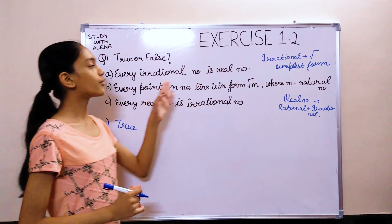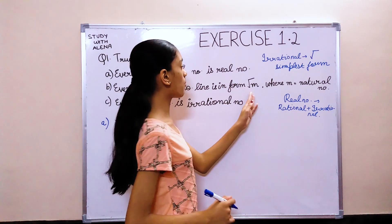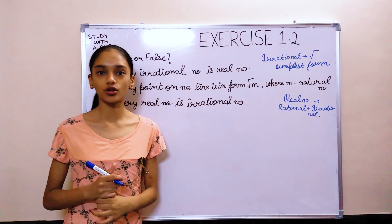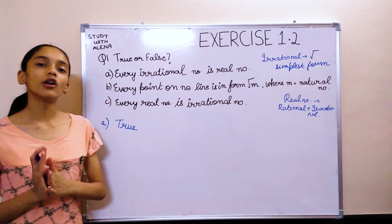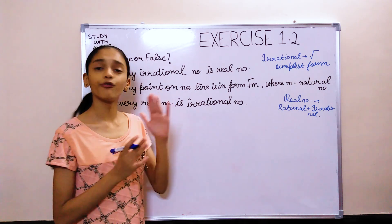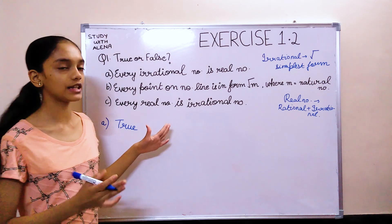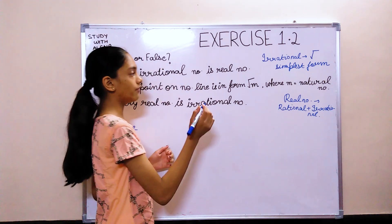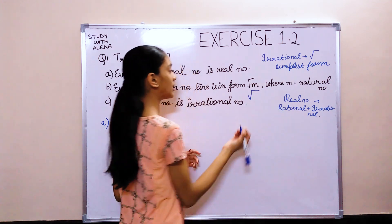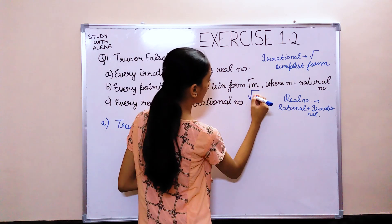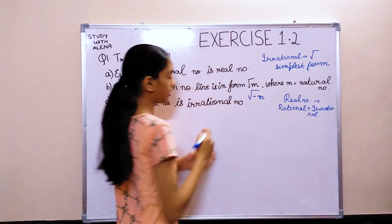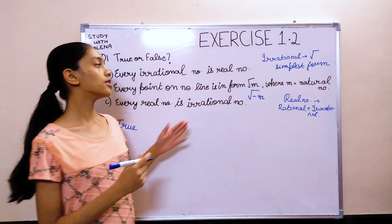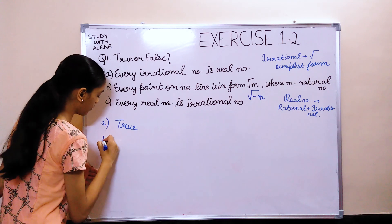Next question. Every point on a number line is in the form of root m, where m is a natural number. Now, on a number line, we have positive numbers, positive integers and negative integers. But, always, root cannot be in the form of negative. We cannot write minus root m. So, this statement would be false.